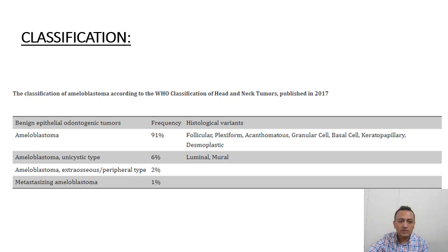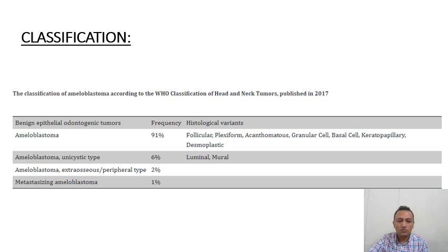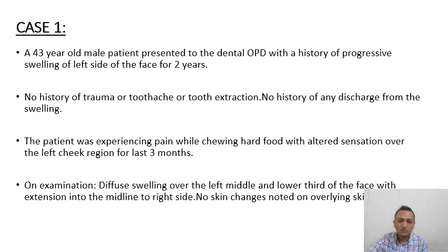Classification: ameloblastoma is divided into four types. The conventional ameloblastoma accounts for 91%, unicystic type 6%, extraosseous peripheral type 2%, and metastasizing ameloblastoma 1%.